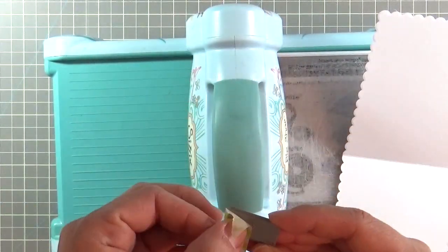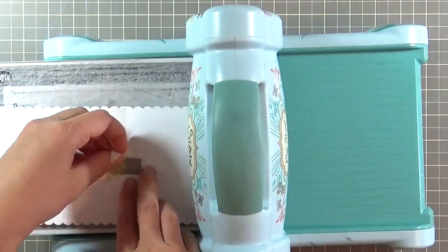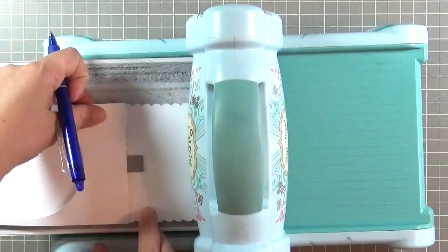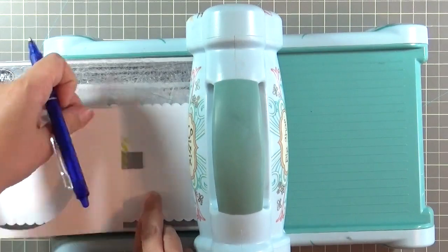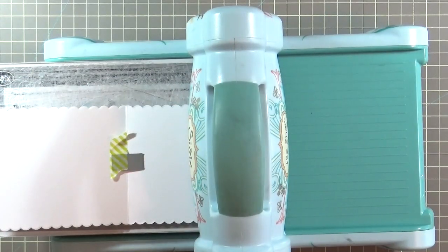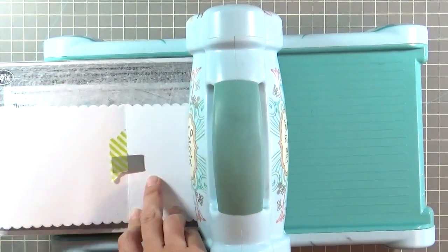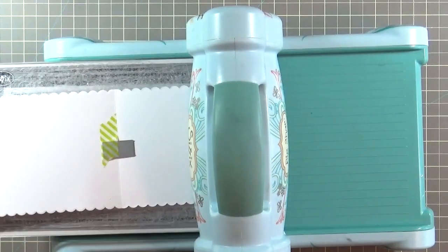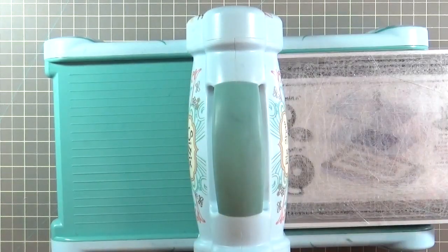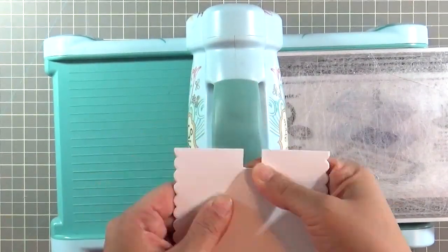For the pop-up trio die, I'm centering that right on the inside of that scalloped inside card base that I made. And I'm just using my ruler to measure and make sure it's perfectly centered. And then I'll run that through. And this is what will let the bunny pop up.